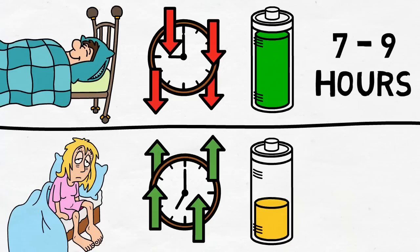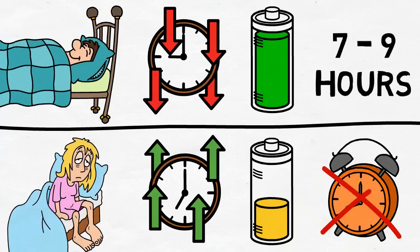Seven to nine hours per night has been shown to be the healthiest for most adults. But optimally you should be sleeping without an alarm clock and let your body wake up naturally instead of forcefully.